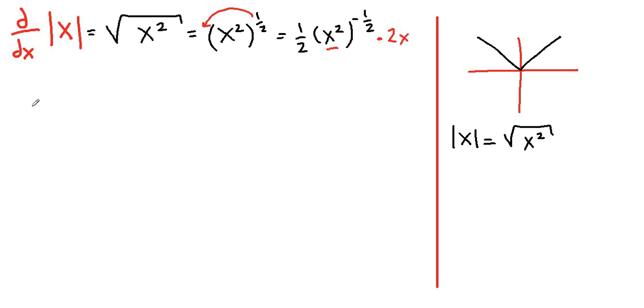Now let's rewrite everything here and clean up. So 2 cancels 2 and we can bring this to the denominator as the positive power and x stays on the numerator.